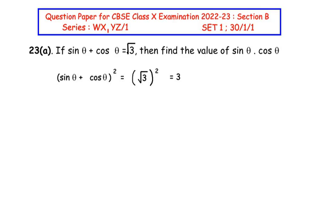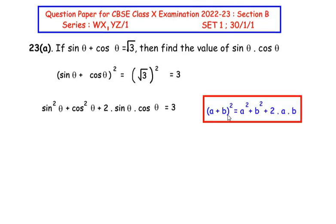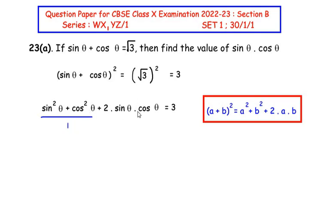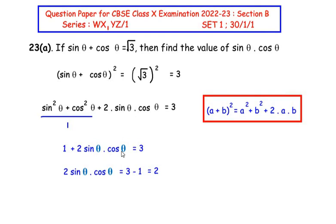On the left hand side we are going to apply an algebraic identity: a plus b, the whole square, is equal to a squared plus b squared plus 2ab. In this case sin theta is a and cos theta is b. So applying this identity we expand the bracket as sin squared theta plus cos squared theta plus 2 times sin theta times cos theta is equal to 3. Now we have a trigonometric identity which says sin squared theta plus cos squared theta equals 1. Substituting this, we simplify the equation as 1 plus 2 sin theta times cos theta equals 3.